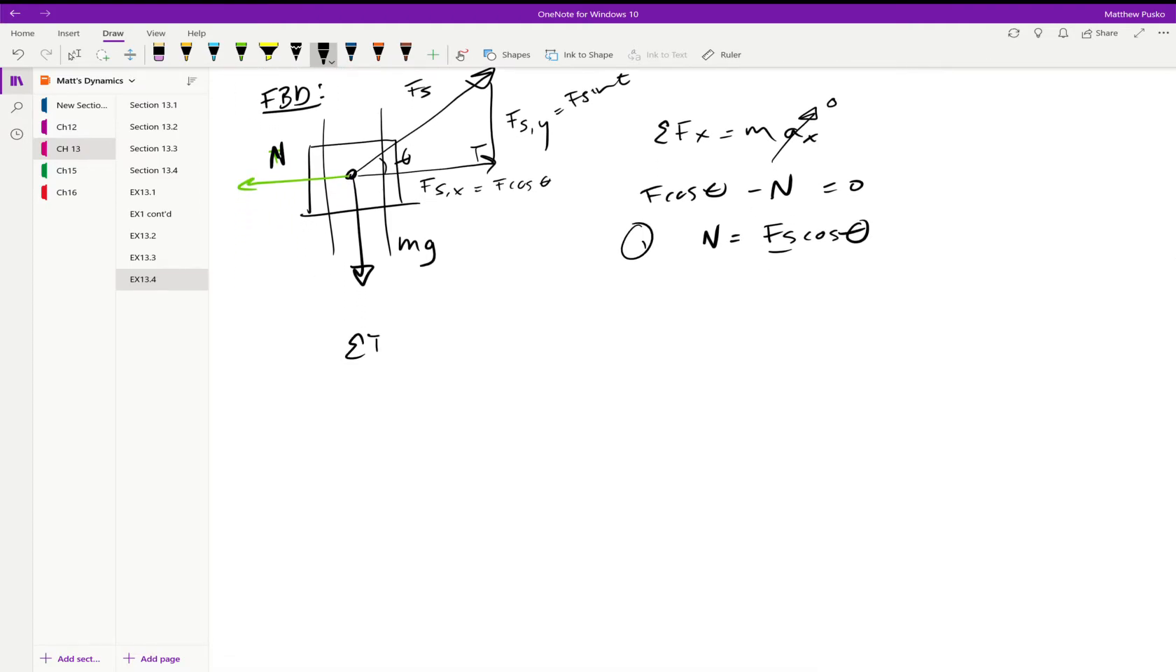Sum of the forces in one direction and need some more information, typically sum of the forces in the second direction or third direction. In the y direction I have a minus mg pointed down and in the up direction I have a positive spring force times the sine of theta. That equals the mass, two, times the acceleration in the y direction. All right, we can call this equation number two.